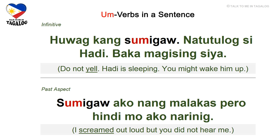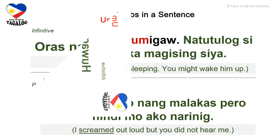Infinitive: huwag kang sumigaw, natutulog si Hadi, baka magising siya. Huwag means don't, sumigaw is to yell or scream, natutulog means sleeping, baka is may or might, and magising is to wake up — do not yell, Hadi is sleeping, you might wake him up. Past aspect: sumigaw ako ng malakas pero hindi mo ako narinig. Sumigaw means screamed, malakas is loudly, pero means but, and narinig means heard — I screamed out loud but you did not hear me.